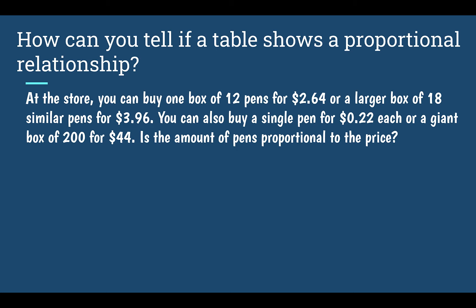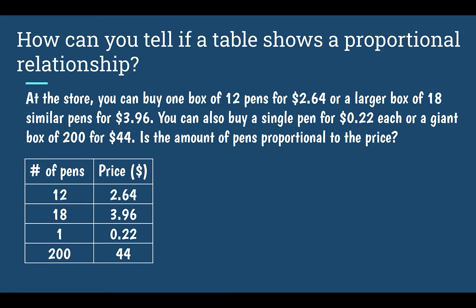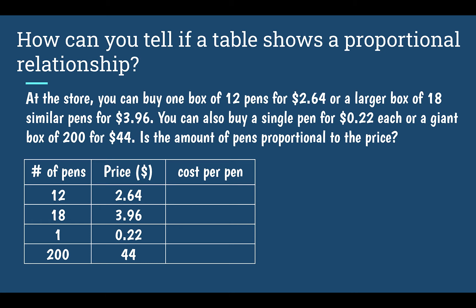At the store, you can buy one box of 12 pens for $2.64, or a larger box of 18 pens for $3.96, or a single pen for 22 cents, or a giant box of 200 for $44. Is the amount of pens proportional to the price? I put all of my values in a table: 12 pens for $2.64, 18 pens for $3.96, and so on. I need to figure out if the number of pens is proportional to the price, so we're going to check if the cost per pen — our constant of proportionality — is the same every time. I'm going to find it by dividing my price by how many pens I would get.